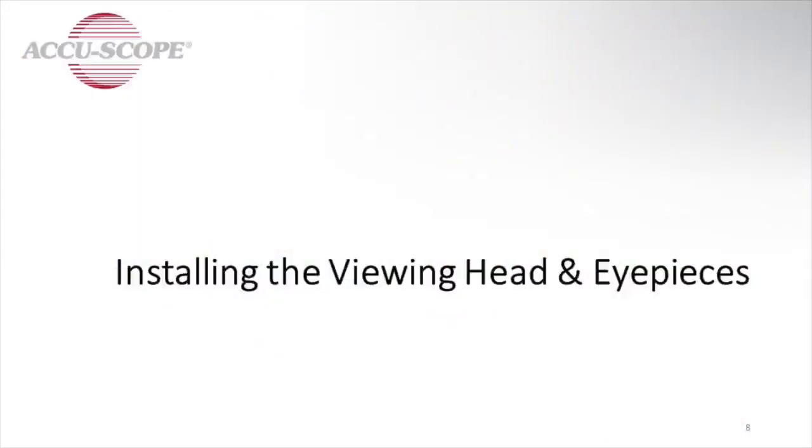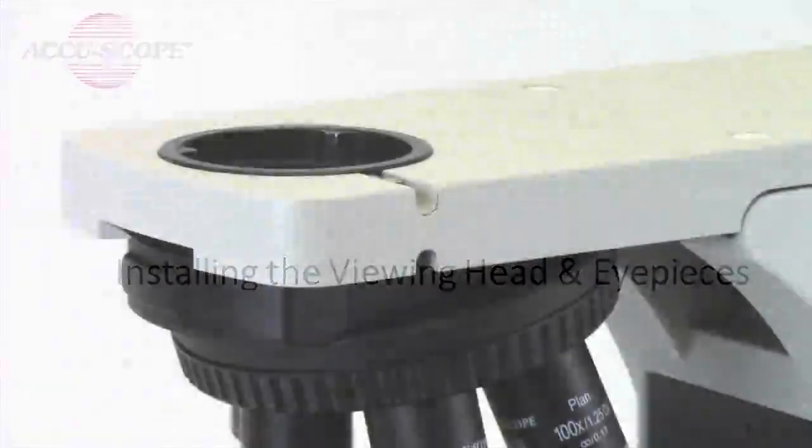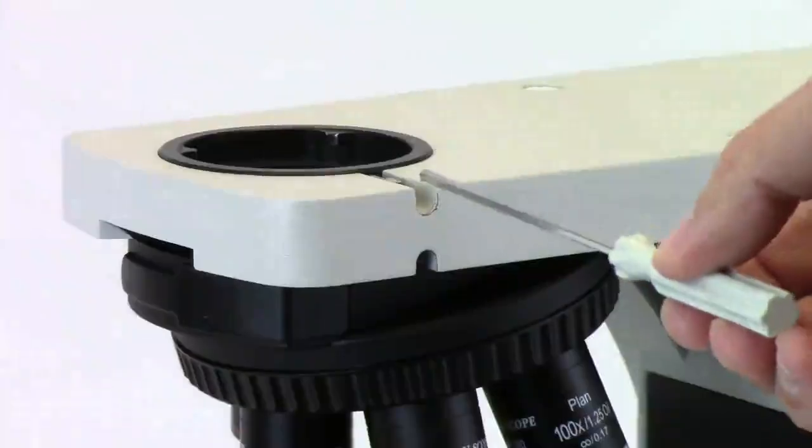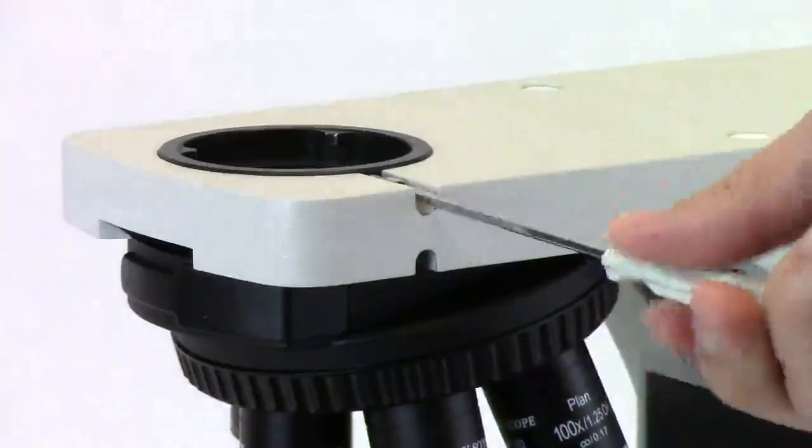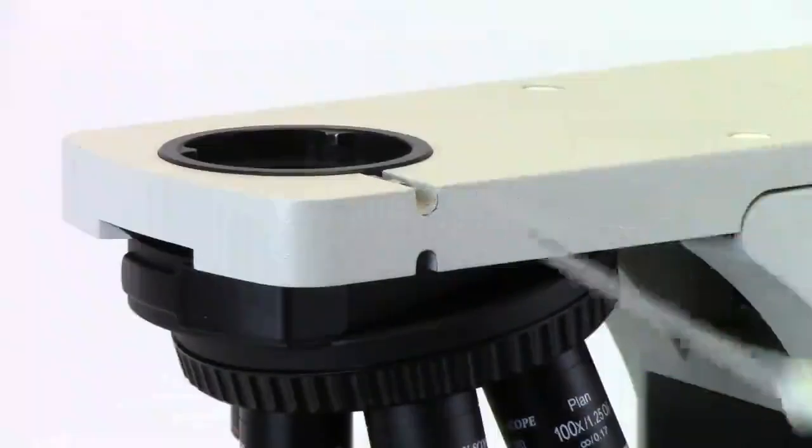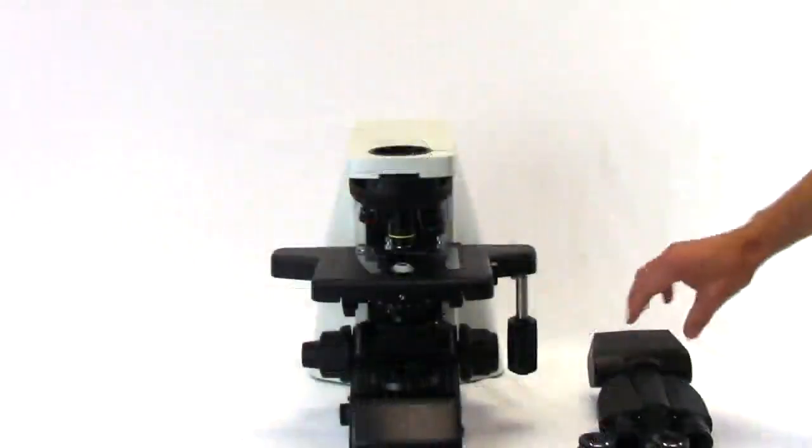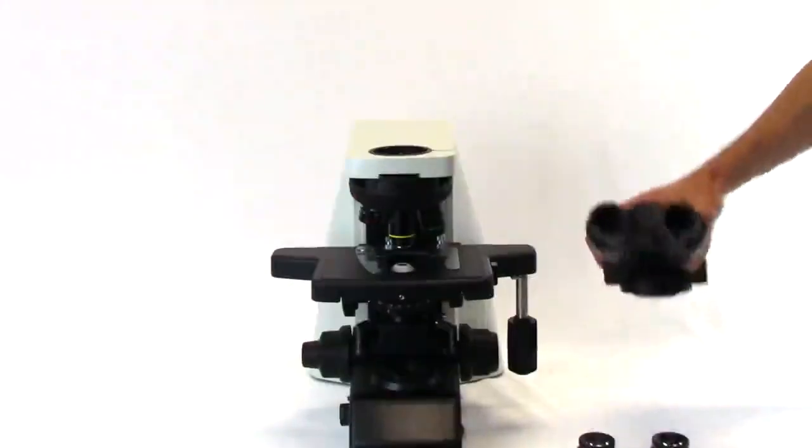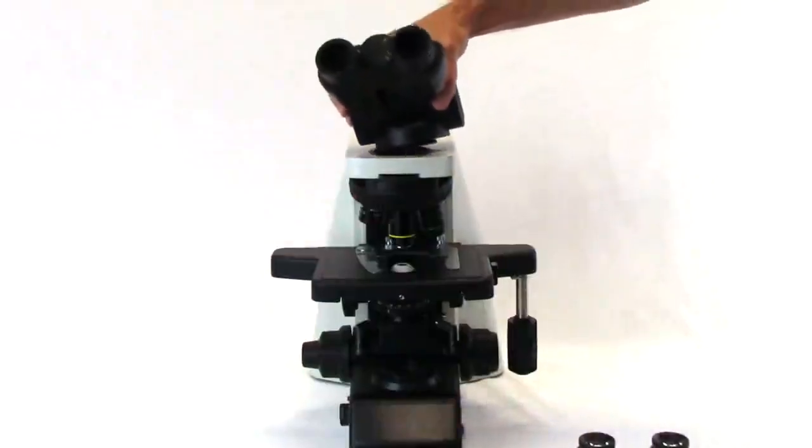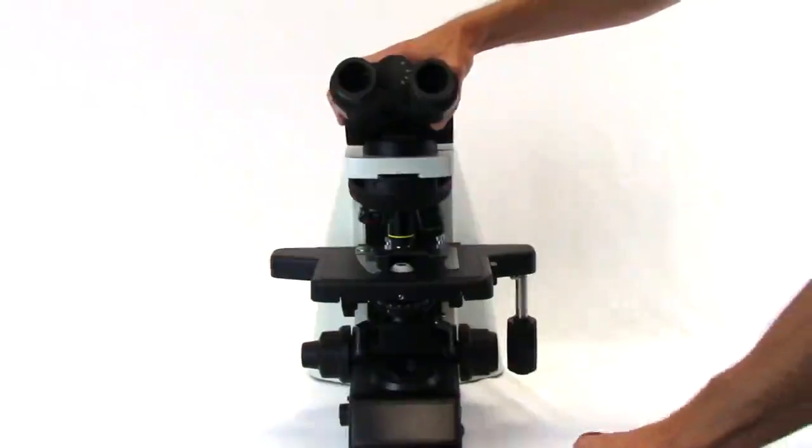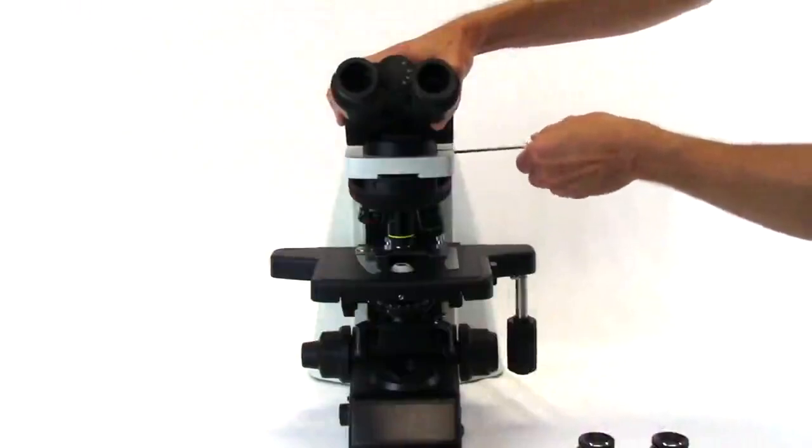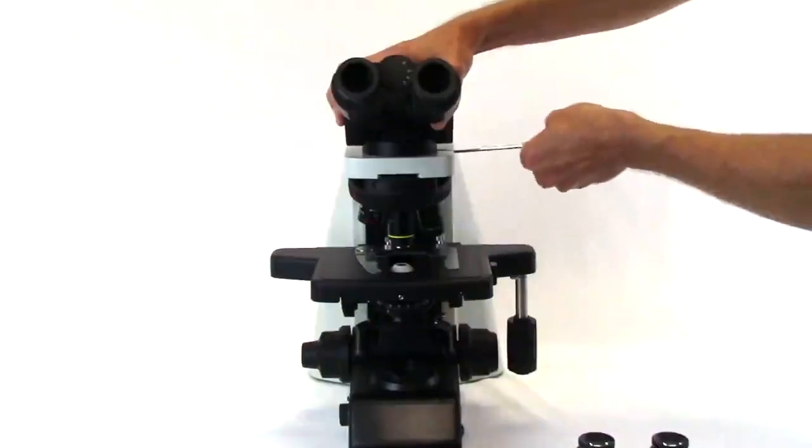Installing the viewing head and eyepieces. Using the hex wrench, loosen the lock screw on the top of the microscope body. Position the viewing head above the dovetail opening, tilted slightly to the left and with the two eyepiece tubes facing forward. Ensure the head sits flat on the microscope frame and retighten the lock screw.